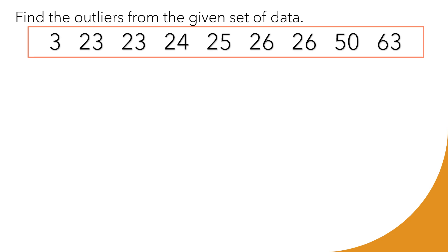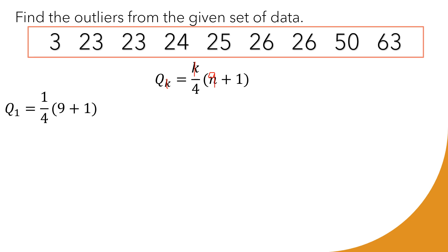Step one is to compute Q1 and Q3 using the same formula. For Q1, k = 1 and n = 9 since we have 9 data values. So Q1 = (1/4) × (9 + 1) = (1/4) × 10 = 10/4 = 2.5. This won't give us an exact location.